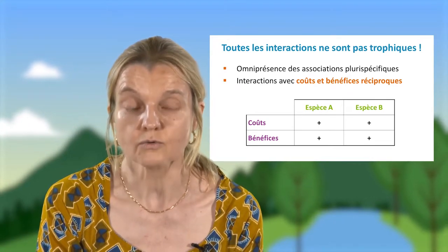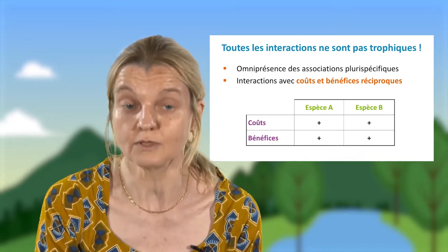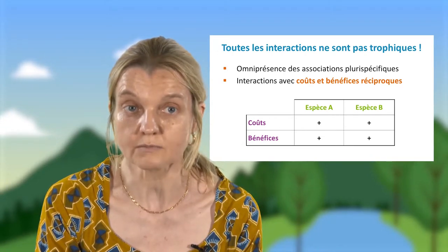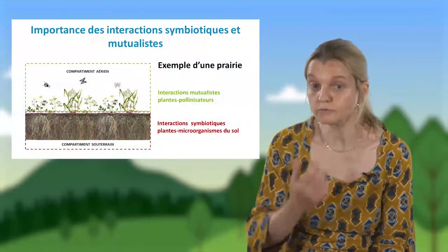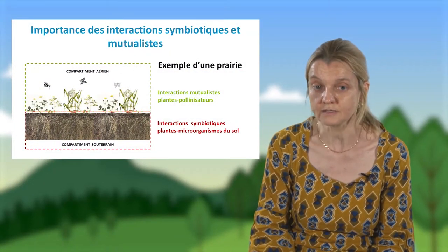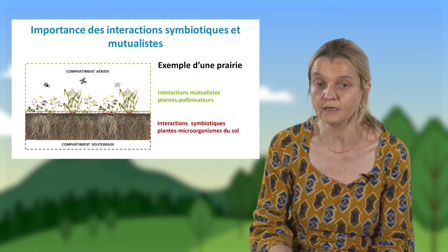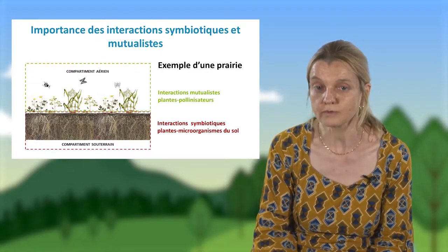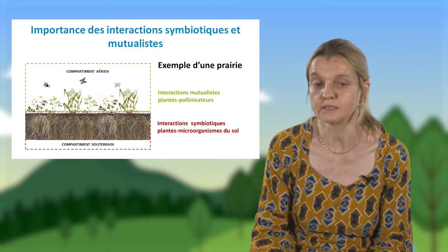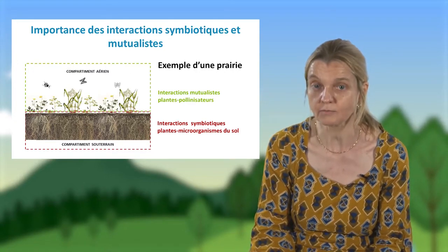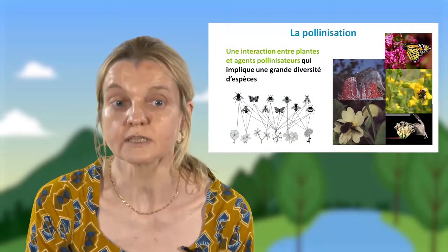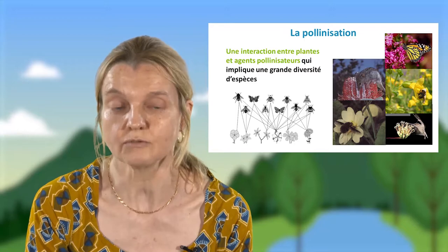Les symbioses, où il y a un contact permanent entre les deux individus des deux espèces, et les mutualismes, où les interactions peuvent être plus ponctuelles. Pour vous illustrer mon propos, je vais prendre l'exemple d'une prairie. On va regarder dans cette prairie, dans le compartiment aérien, un exemple d'interactions mutualistes — les plantes avec leurs pollinisateurs — et un exemple d'interactions symbiotiques — les racines des plantes avec les micro-organismes du sol.